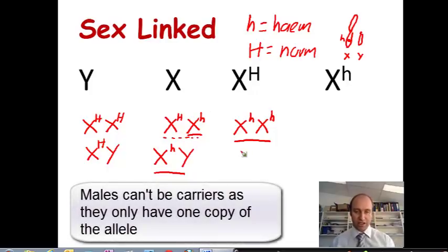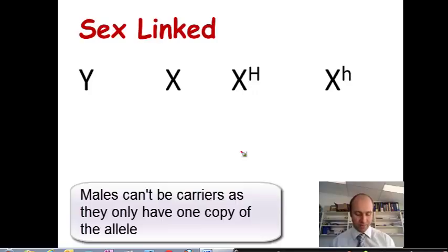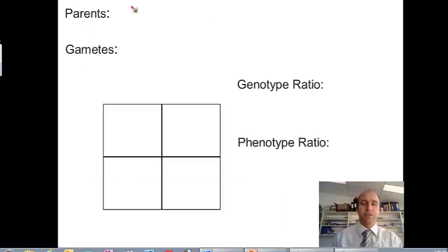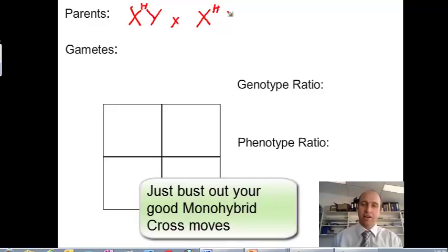Let's have a look at an example here with a Punnett square. Let's cross a male who is normal, that is not affected by the disease, with a female carrier and see what we get.